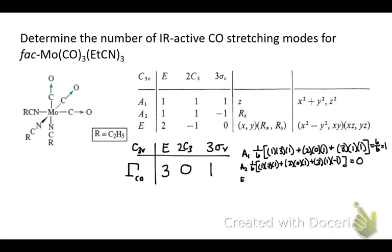And then for E, divide by the order, we get one times three, and the character is two of that irreducible representation. Two times zero times negative one and three times zero. So once again, we get six divided by six equals one. So the sum of irreducible representations for the CO stretching modes in this complex are an A1 and an E.